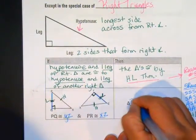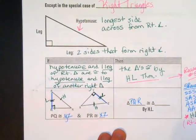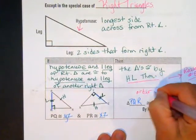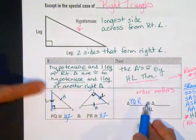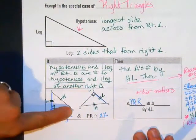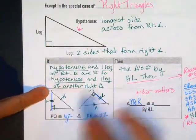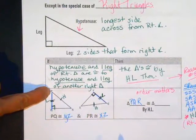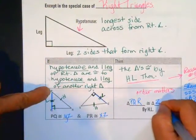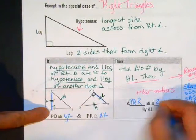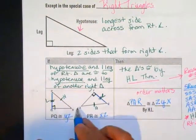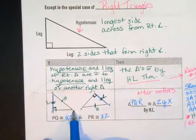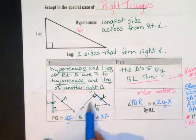When naming the triangles, order matters — you have to match up the corresponding parts. Triangle PQR: P is between the hypotenuse and the leg, so P matches with Z. Q is the right angle, so it matches with Y. R matches with X. So triangle PQR is congruent to triangle ZYX.